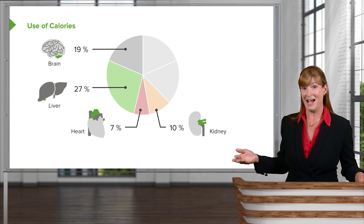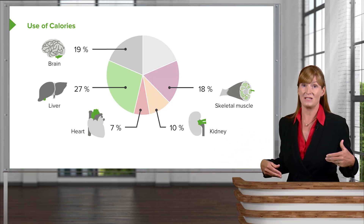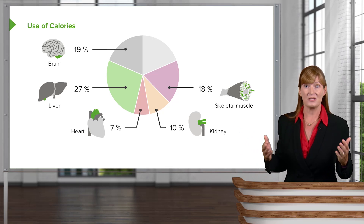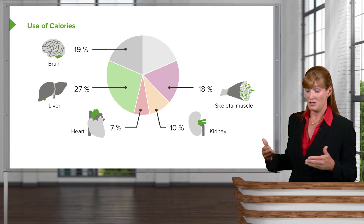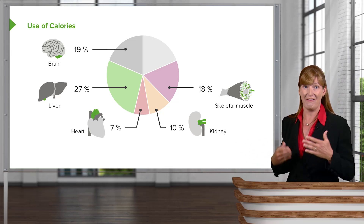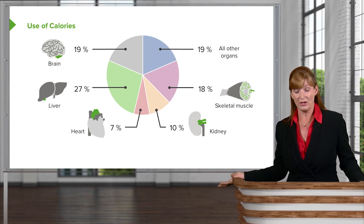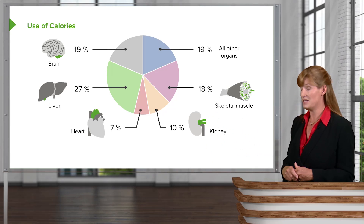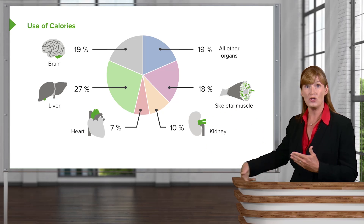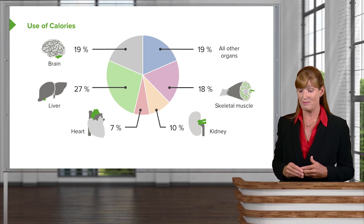The kidneys are pretty active in using calories, and then skeletal muscle — we're using skeletal muscle to stand up and move around at all times, so it is going to use, surprisingly, just about as much as the brain. So the brain really does have a high demand on our caloric intake. All the other organs fit into the other slice of the pie.